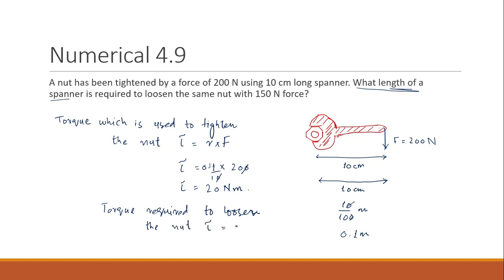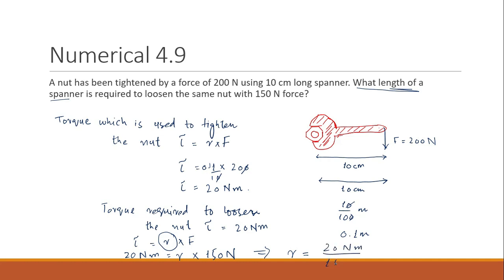The torque required to loosen the nut is the same: tau equals 20 newton-meters, and torque equals r cross F. We know the torque is 20 N·m and the force this time is 150 newtons. So r equals 20 newton-meters divided by 150 newtons, giving r approximately equal to 0.133 meters, or about 13.3 centimeters.